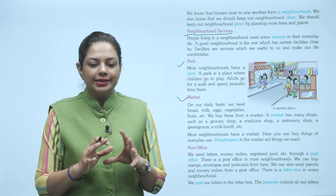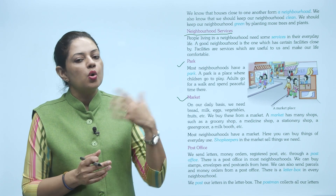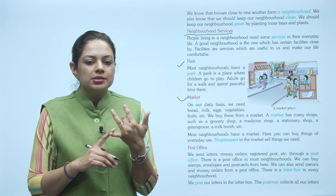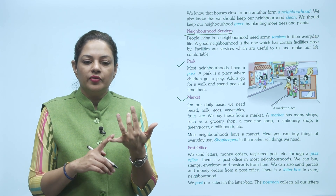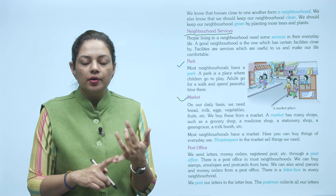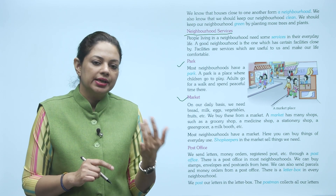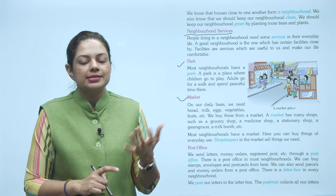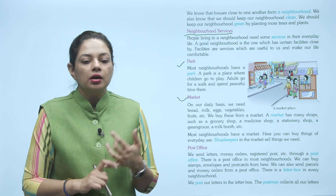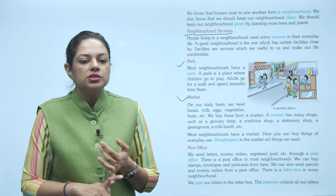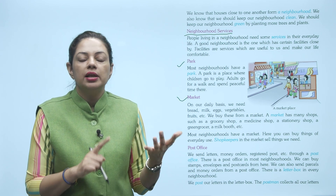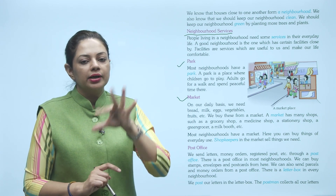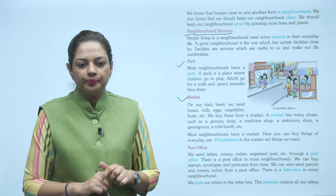Market yaani bazaar mein bohot saari dukanen hoti hain — jaise ki grocery shop, jisse hum daal, aata, tel wagera lete hain; medicine shop jahaan se hum dawaaiyaan lete hain; stationary shop jahaan se hum copy, kitaabein, pencil aisi cheezein lete hain; green grocer jahaan se hum sabziyan khareedte hain; milk booth jahaan se hum doodh, dahi, paneer lete hain. Toh market mein bahut saari shops hoti hain.